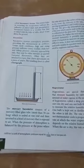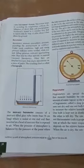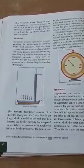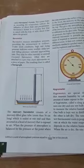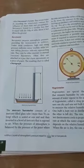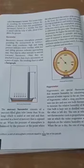Now this Stevenson's screen helps in recording the temperature without the influence of direct heat and precipitation. Now what is Stevenson's screen? Stevenson's screen is a wooden box that is raised with the help of stilts about 4 feet above the ground.